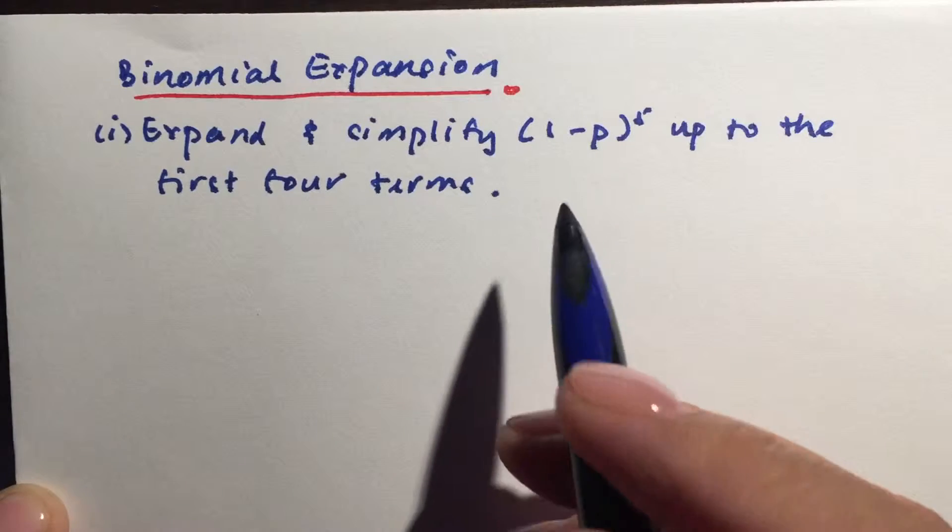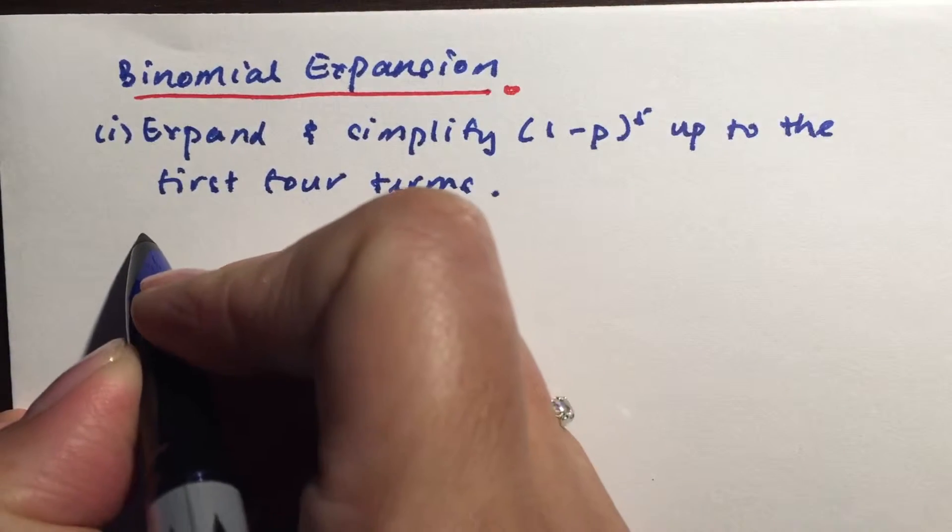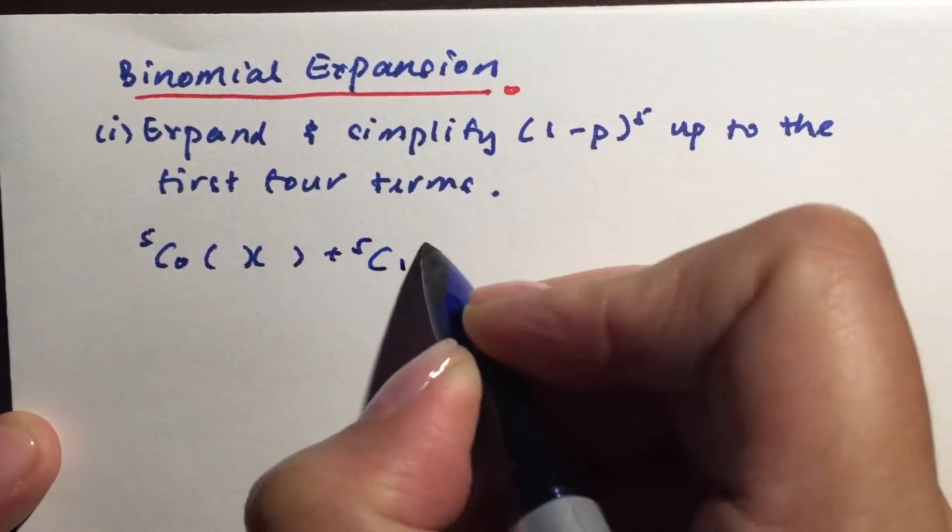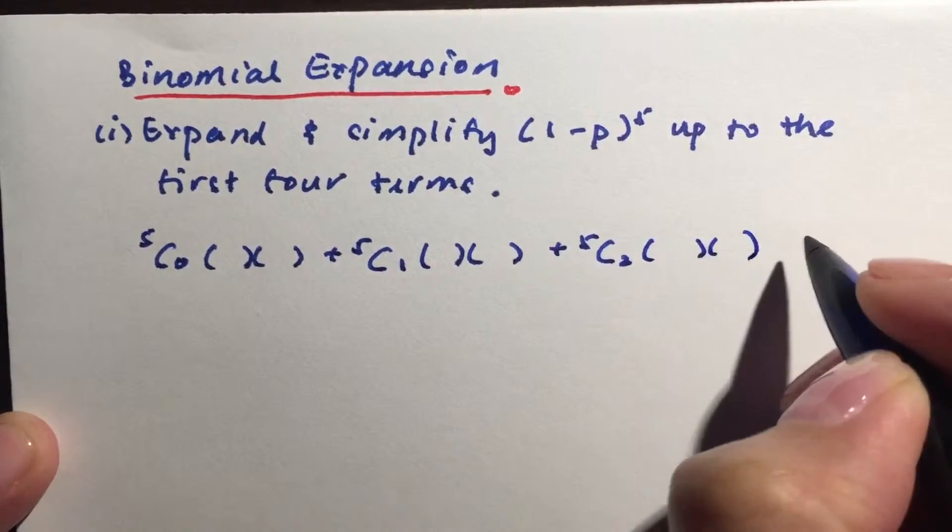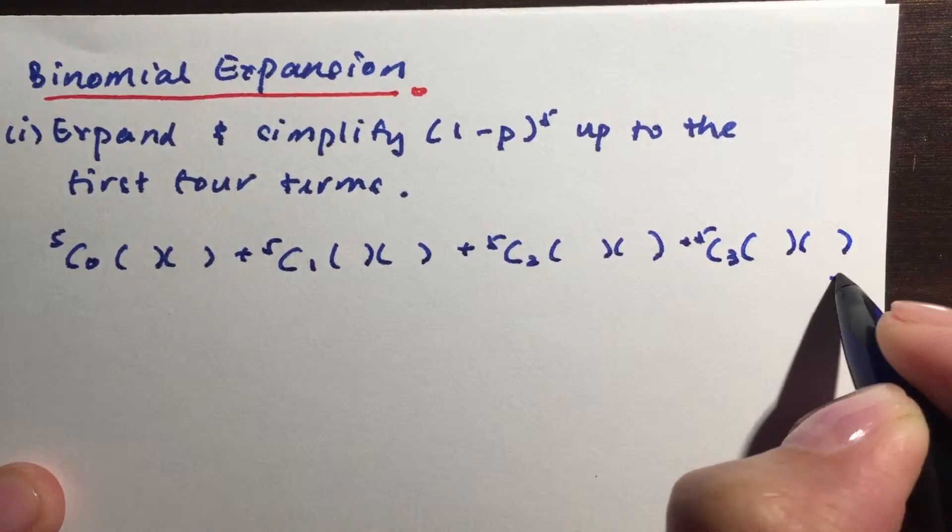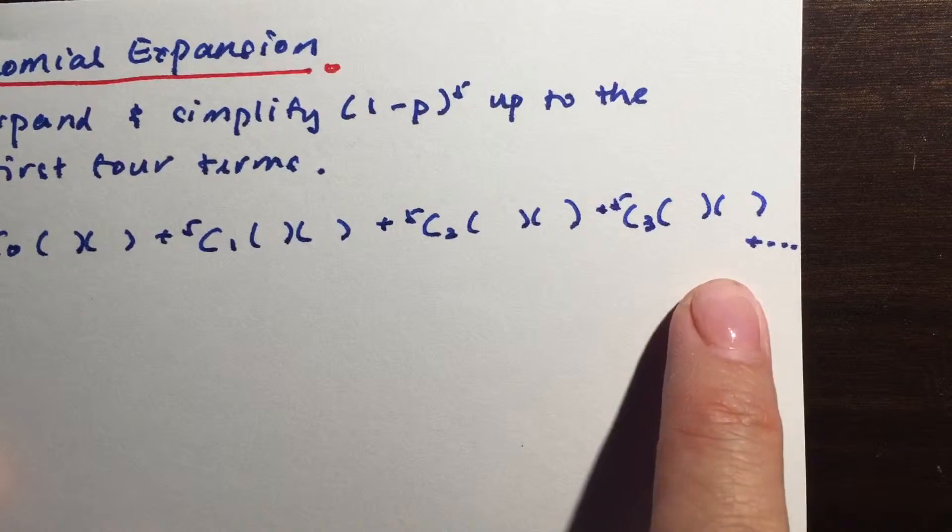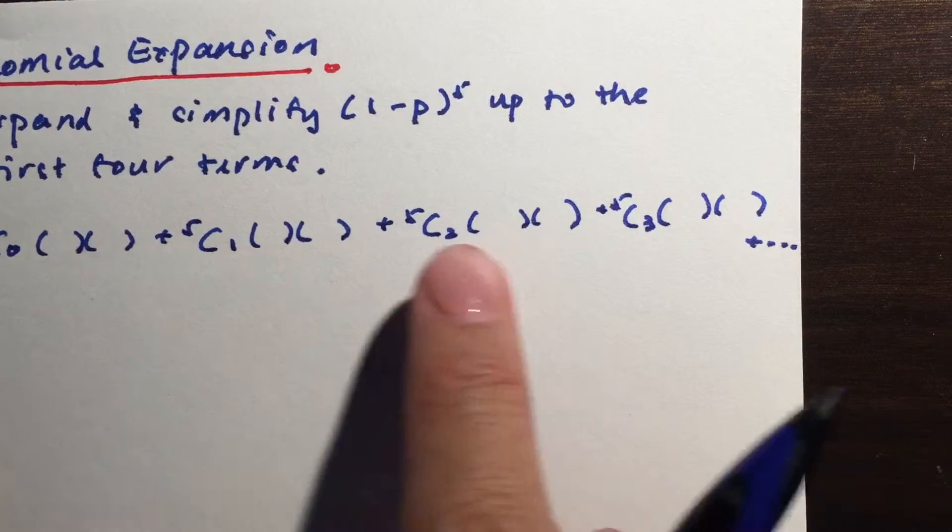So in order for us to expand this, we have to understand that this is power 5. So what we can do is that we write down the 5 choose 0, 5 choose 1, 5 choose 2, and 5 choose 3. I'm going to put a plus dot dot dot here because it means there are more terms, but we're not going to deal with them because we are asked for the first four terms. We have 1, 2, 3, 4.